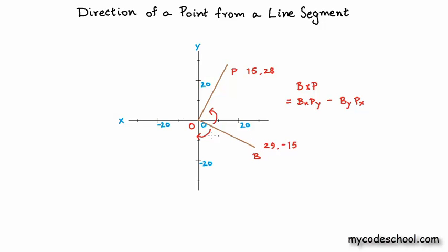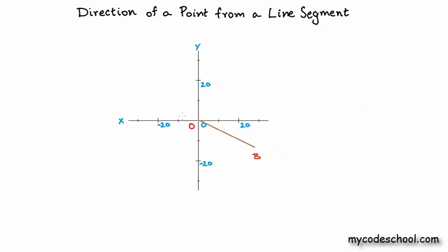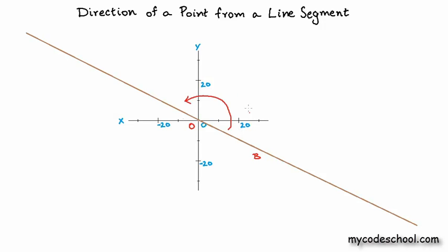We can quickly verify this: in the given example, the angle BOP is clearly counterclockwise, so we expect the cross product to be positive. Calculating it gives 1037, which is indeed positive. If we extend line OB infinitely in both directions, any point P in the upper half will produce a counterclockwise angle BOP, meaning the cross product is positive. Any point in the lower half will produce a clockwise angle, meaning the cross product is negative.